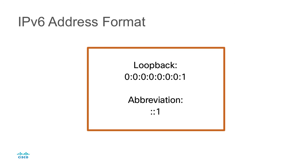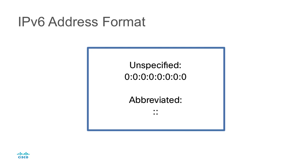We use the loopback address to test our IP stack and make sure we can ping ourselves, allowing for communication within our own system. IPv6 also has the concept of a loopback address. That loopback address is 0:0:0:0:0:0:0:1, which is a mouthful, and we can abbreviate it as ::1. Finally, an unspecified address would be all zeros, which we abbreviate with just a double colon — ::.